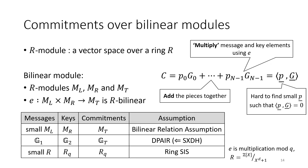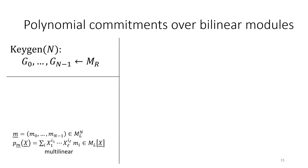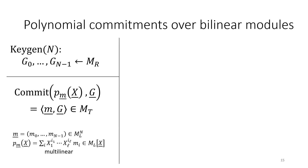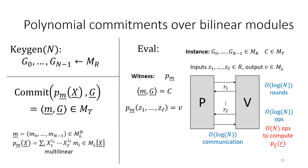You can instantiate this bilinear module commitment using pairings under the SXDH assumption, or get lattice-based commitments using ring-SIS. Inside a polynomial commitment scheme, we sample uniformly random keys from MR and commit to message polynomials by taking the vector of coefficients. When we plug in all the details, the evaluation protocol from BCS21 deals with scalar product relations over bilinear modules.